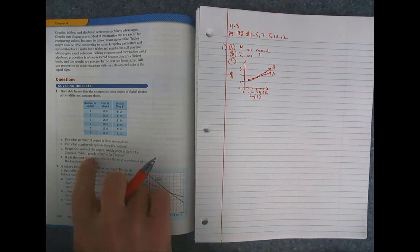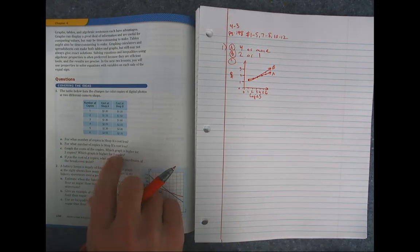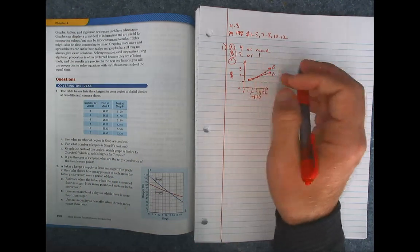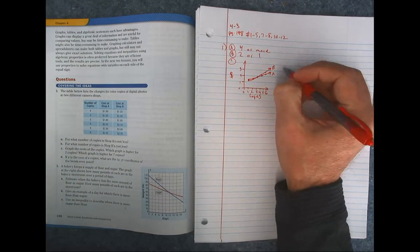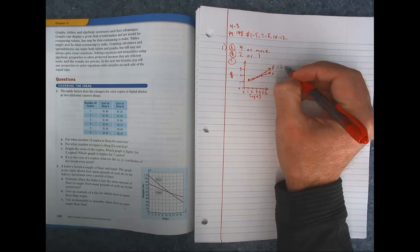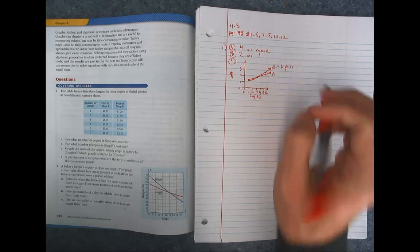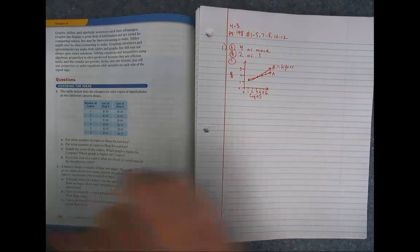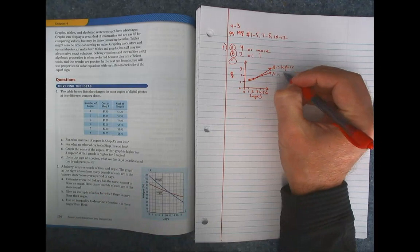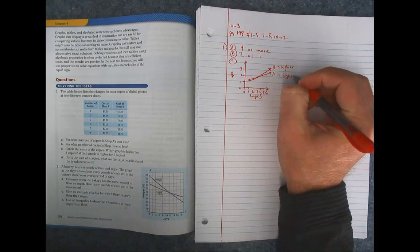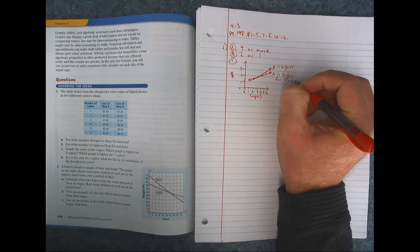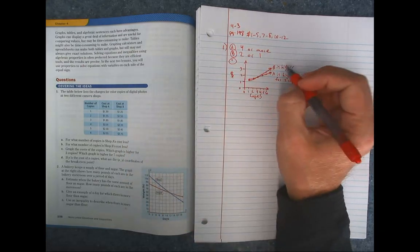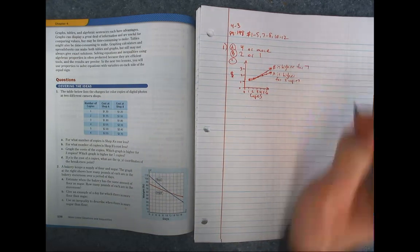And then answering the question, which graph is higher for 7 copies? So that would be B, of course. Oh, and we forgot to answer for 2 copies. So I'm going to say A is higher for 2 copies. So for 2 copies, it's just above it. And we can pull that from the table, of course, as well. And B is higher for 7.